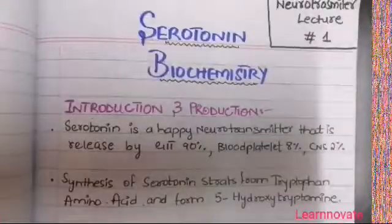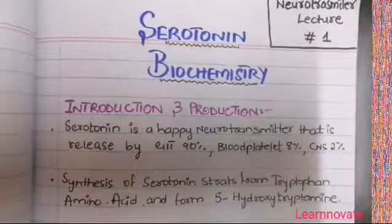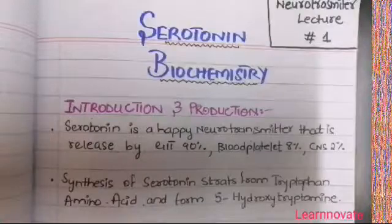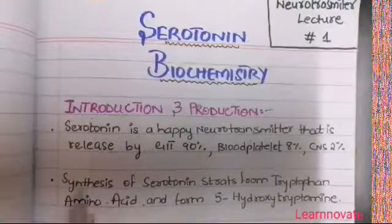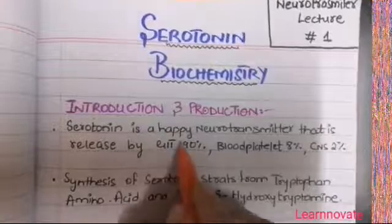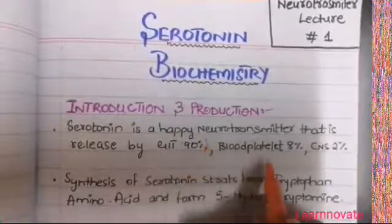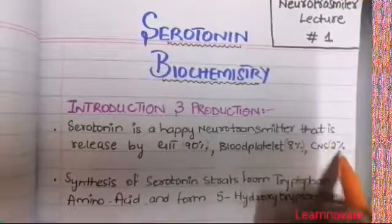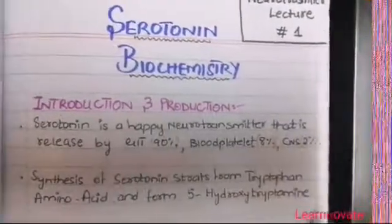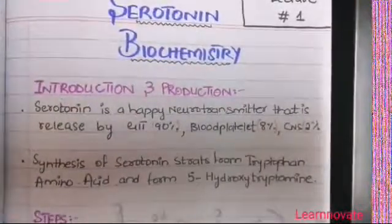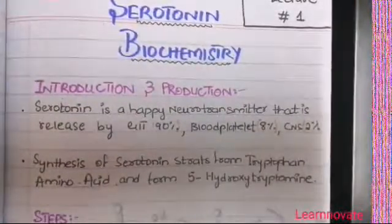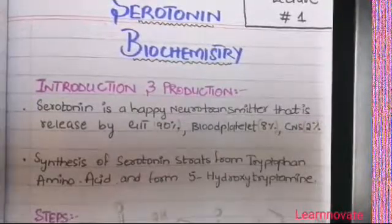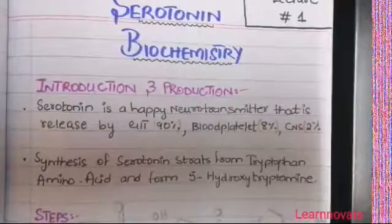Starting with the introduction and production of serotonin. Serotonin is a happy neurotransmitter and it is released by the GIT tract about 90%, blood platelets about 8%, and by the CNS about 2%. It has a major inhibitory role in the central nervous system and different effects on the GIT tract and blood.